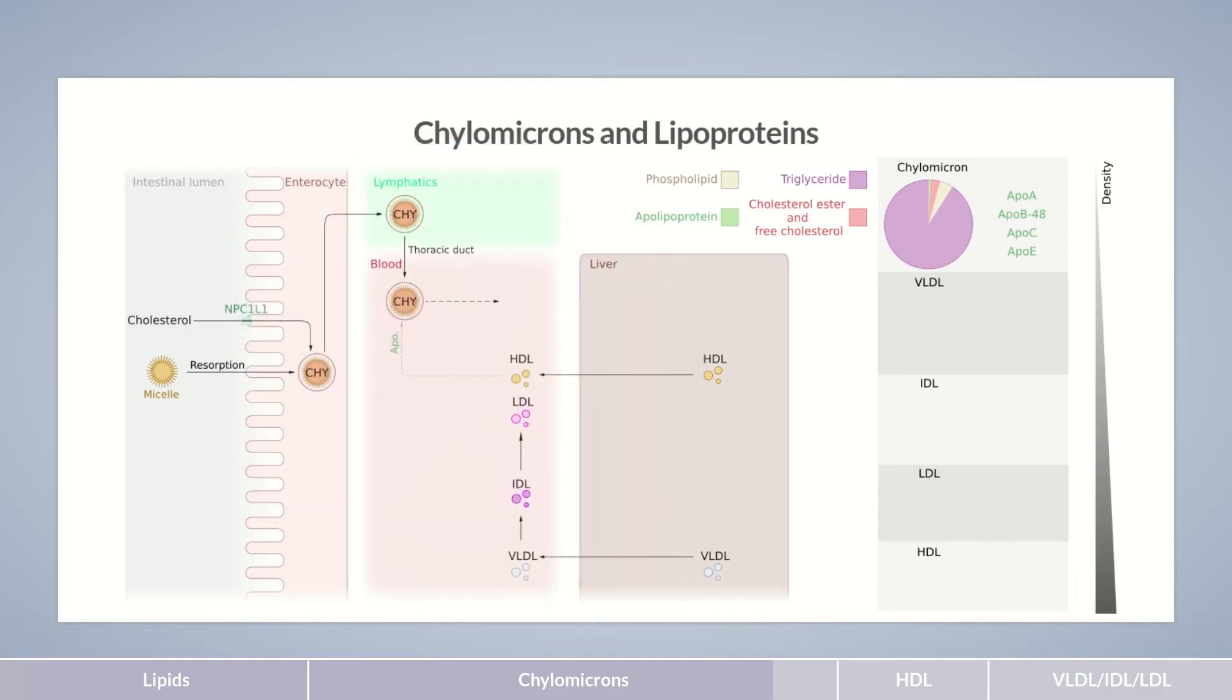LPL breaks down almost all triglycerides in chylomicrons, building free fatty acids. The remaining particles are extremely rich in cholesterol. They transfer the apolipoprotein ApoA to HDL, forming a chylomicron remnant. This is taken up by the liver, using ApoE receptors, and broken down again.